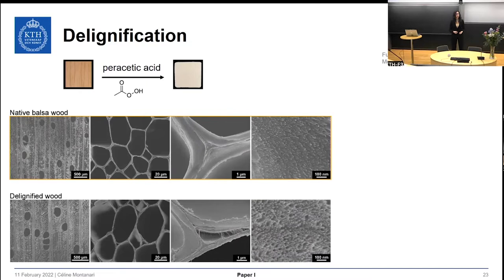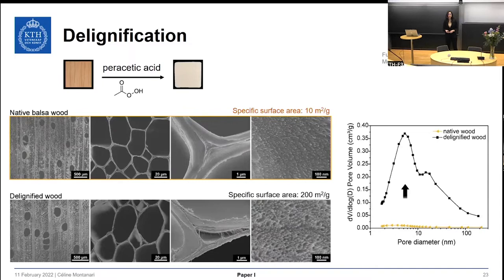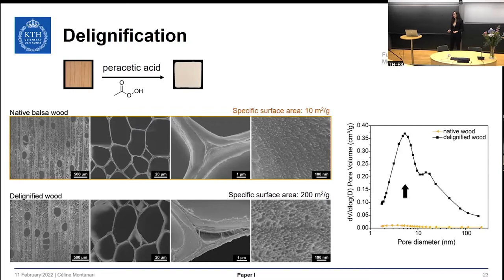We observed microscale porosity at the cell corner as well as the appearance of nanoscale porosity in the cell wall. This was further supported by a large increase in specific surface area, from about 10 m²/g up to 200 m²/g after delignification. There was also the appearance of pores in the range of 2 to 10 nanometers, supporting the presence of nanoscale porosity within the cell wall. So after delignification, we not only remove the light-absorbing component but also generate porosity, improving cell wall accessibility for further functionalization.